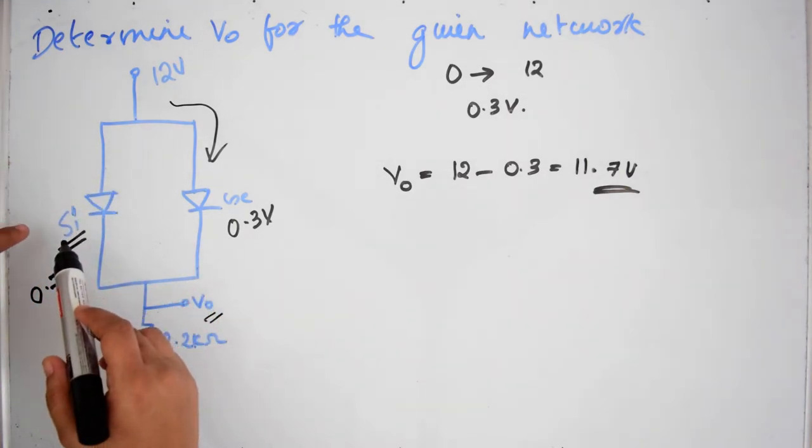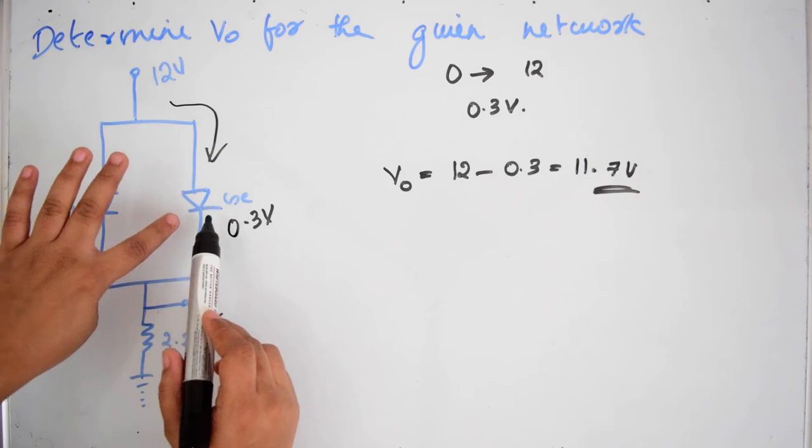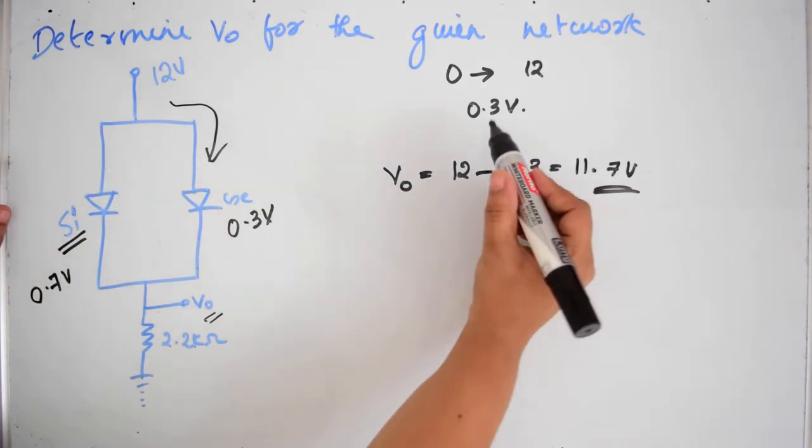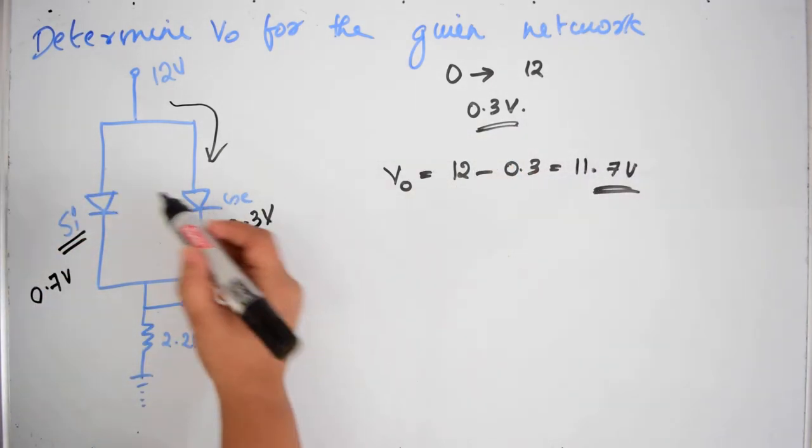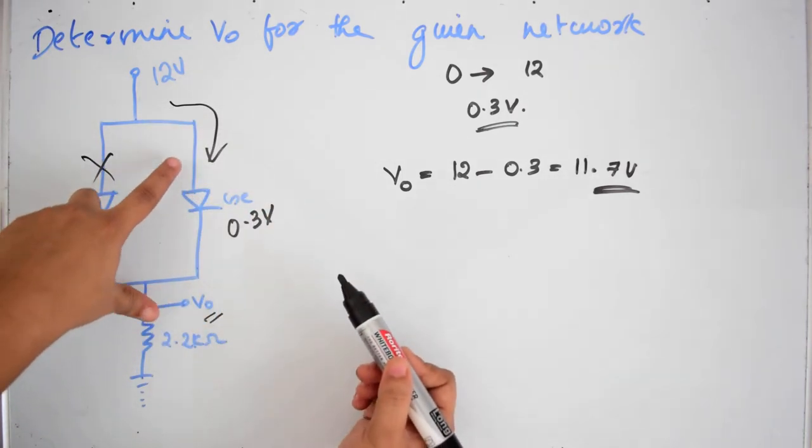Because silicon diode will never turn on. Since the germanium diode will already turn on at 0.3 volt, there is no path here. It is having only path in this side.